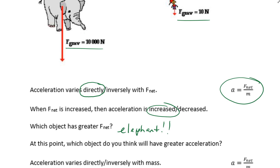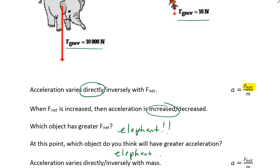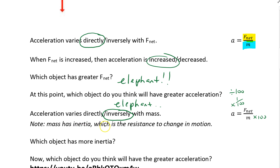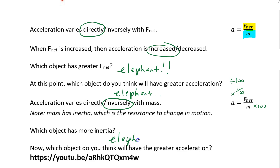But we're not done — it's not just F net. The other piece we can look at is the mass. Acceleration varies inversely with mass. That means that as we increase the mass, if I multiply it by 100, then the acceleration is going to get divided by 100. As mass gets larger, acceleration gets smaller. Mass has inertia, which is the resistance to change in motion — and that's why we get this property. Which object has more inertia? The elephant does. Now, which object will have the greatest acceleration? The answer is: it's going to be a tie.